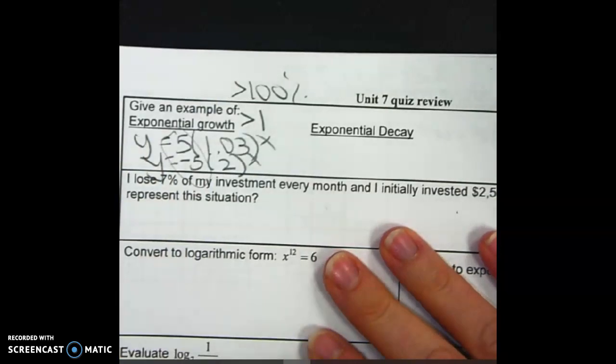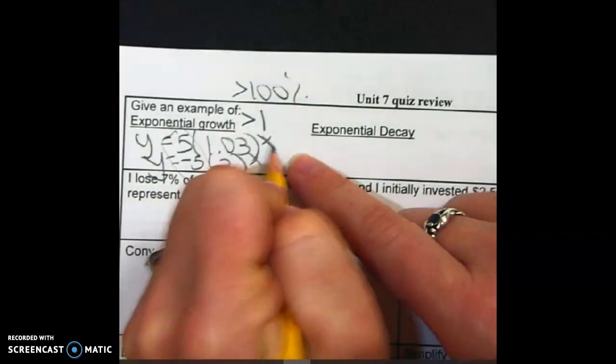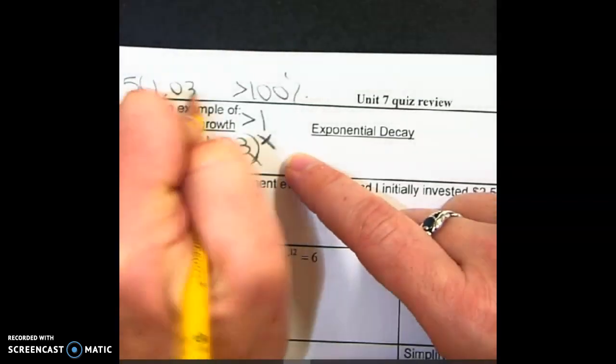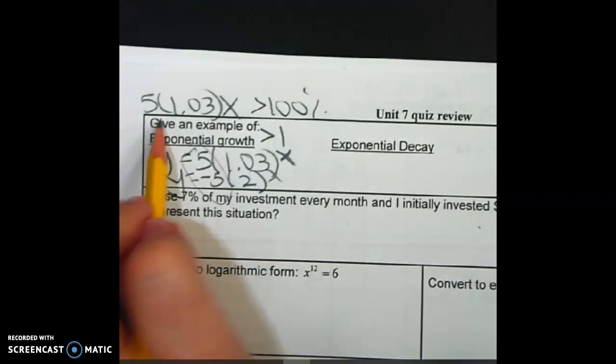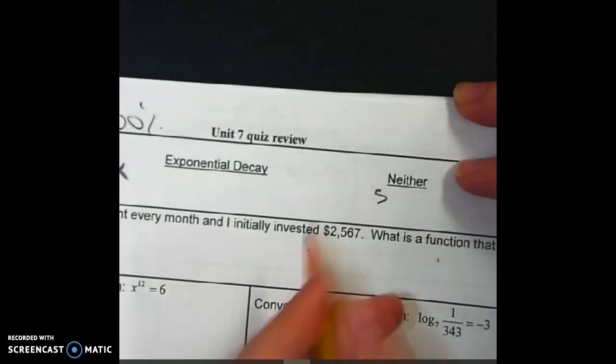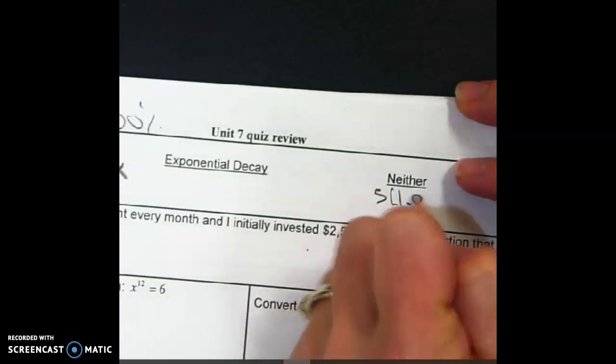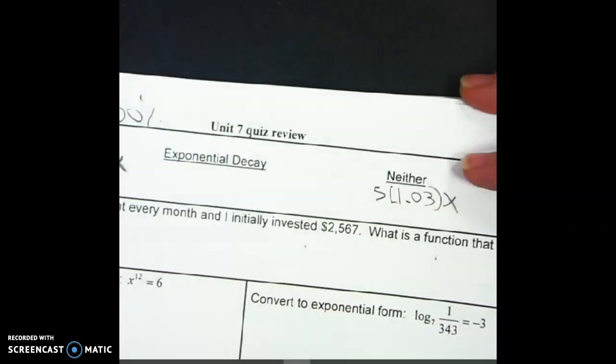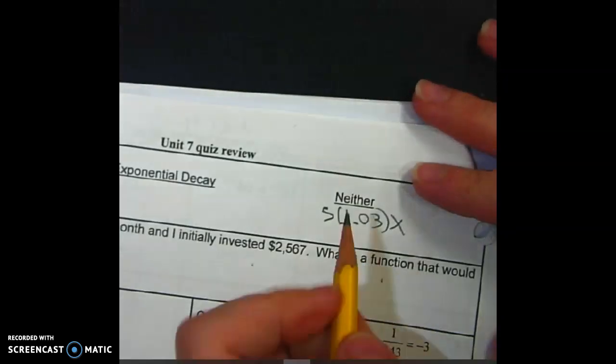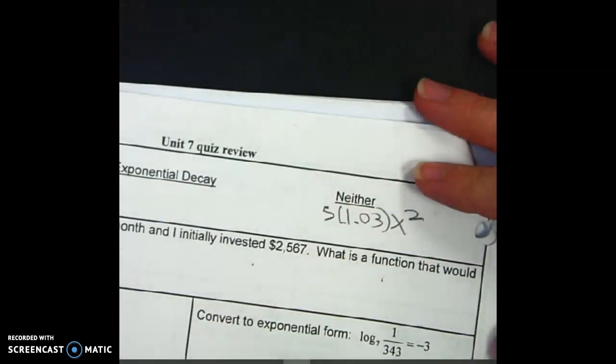Let me zoom in a little bit. As long as it's greater than $1, you're good. This has no purpose, but you have to make sure when it's exponential, it's a little x. If I had 5 times 1.03 to the x, that's linear. So that would be a neither.